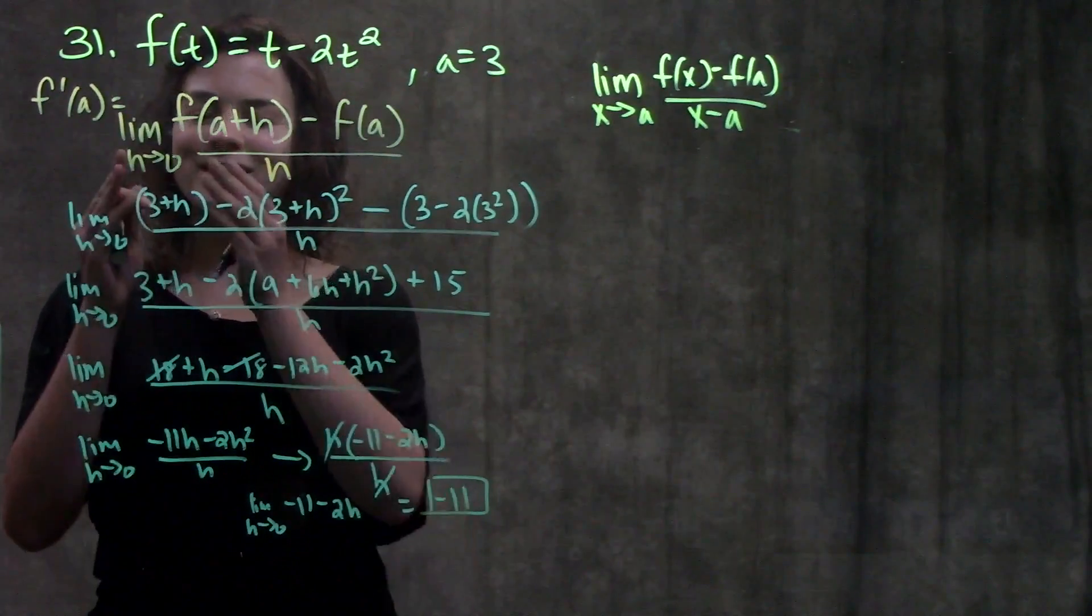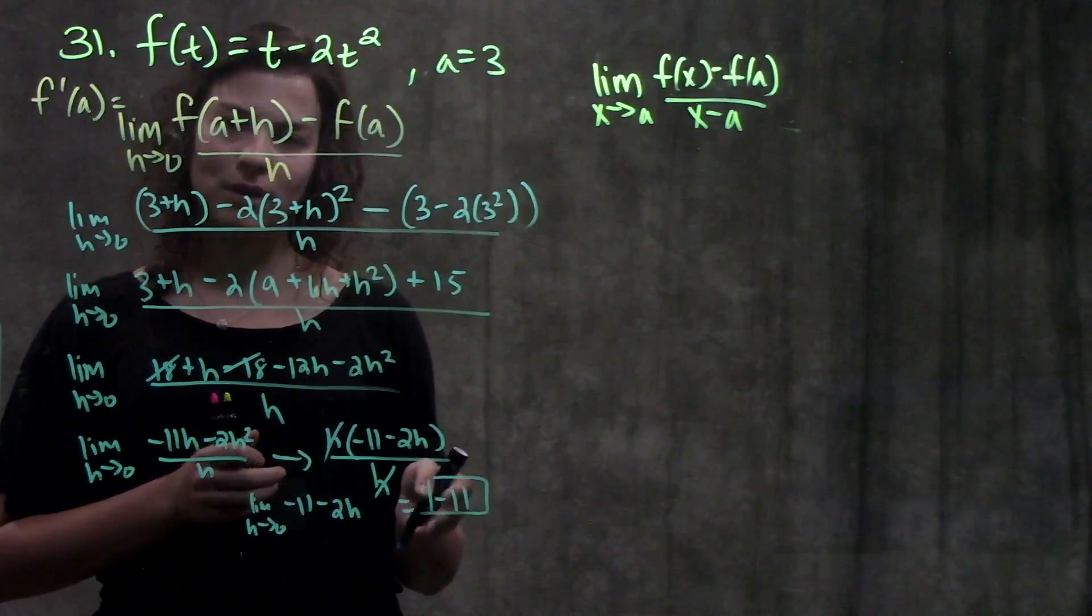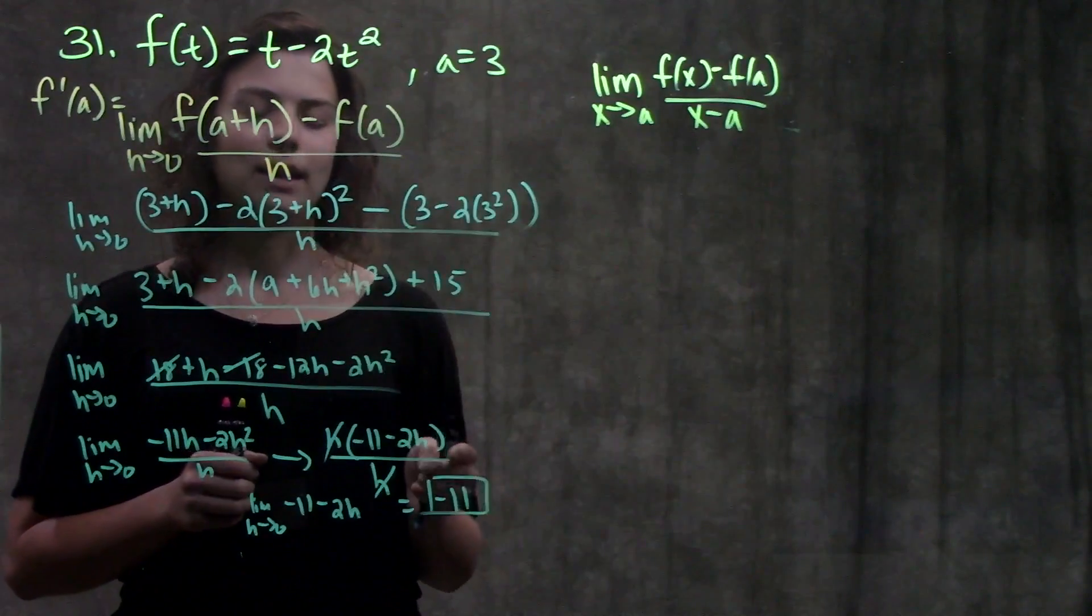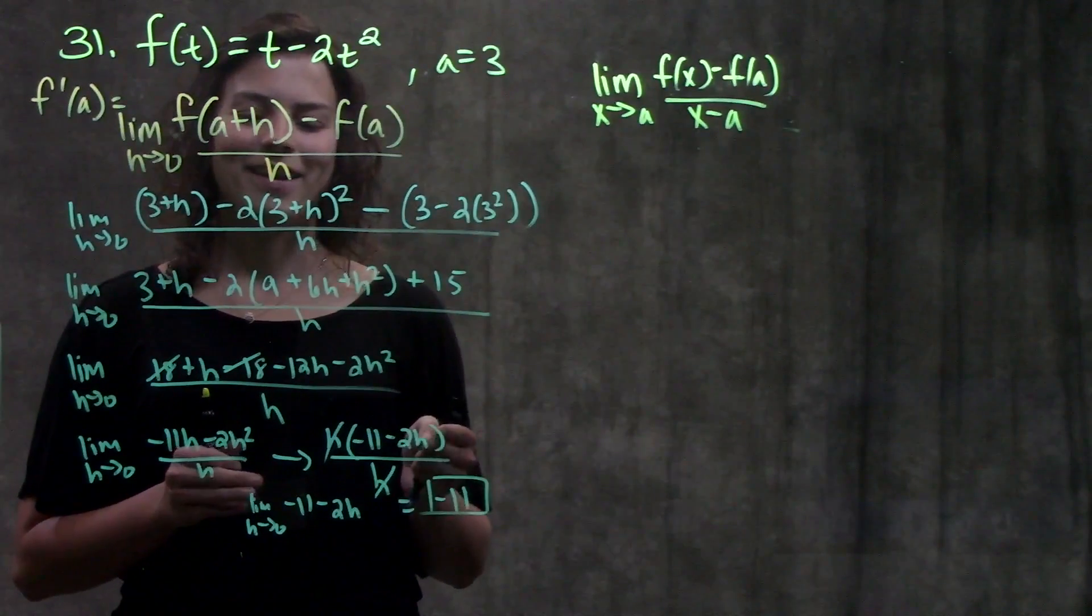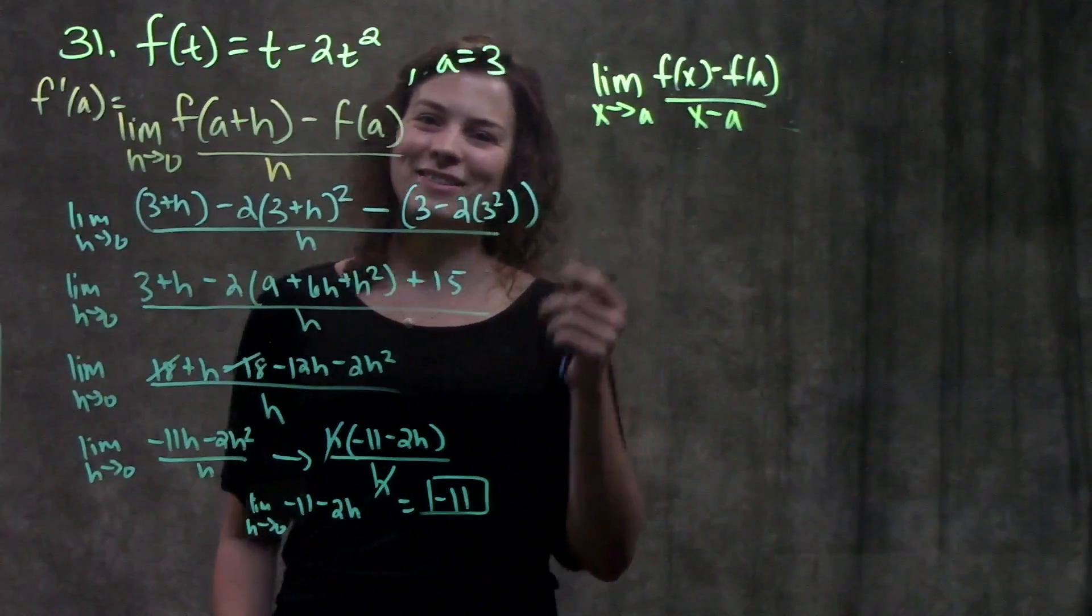So using this limit definition of the derivative, I was able to determine that the derivative or the slope of the tangent line at this point, a equals 3, is negative 11. That was just step 1. We're going to do step 1 again with the other limit definition.